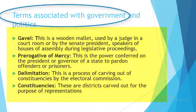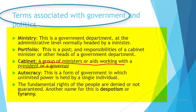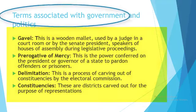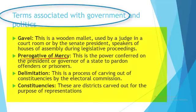Then we have tyranny, which is a brutal way of ruling people where you make use of force. Then we have the prerogative of mercy, which simply means the power of the executive to grant pardon to offenders or prisoners.